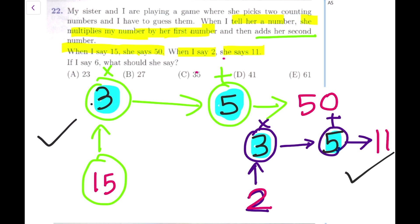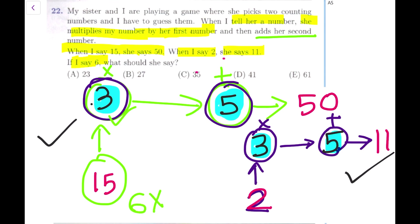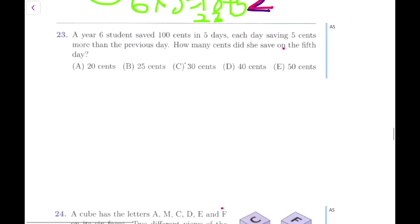Now let's read the rest of the question. If I say 6, what should she say? I'm giving her 6, she multiplies by 3 which is 18, and then she adds 5 - that gives us 23. So if I tell her 6, she will tell me 23. Making a diagram and working out different answers makes it so simple.